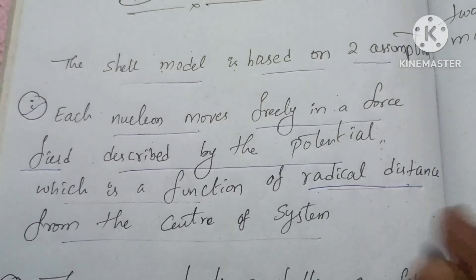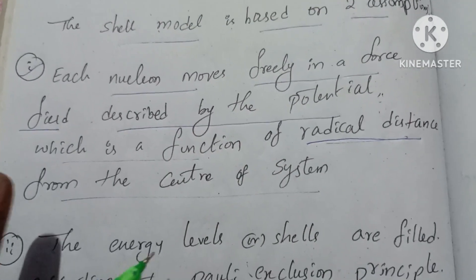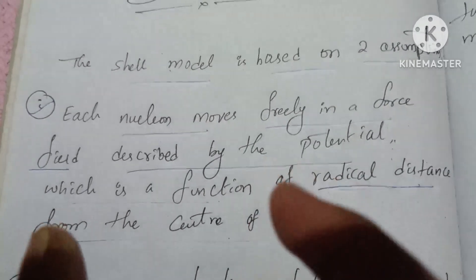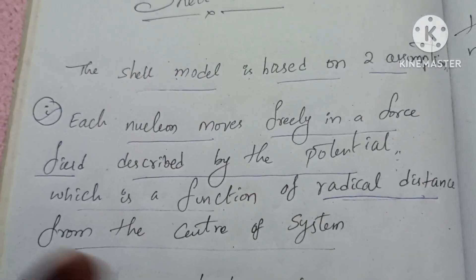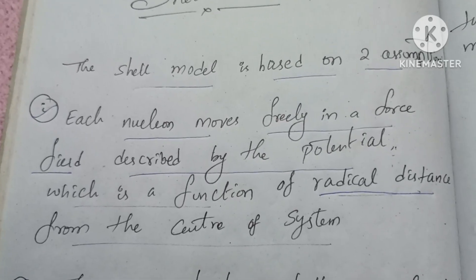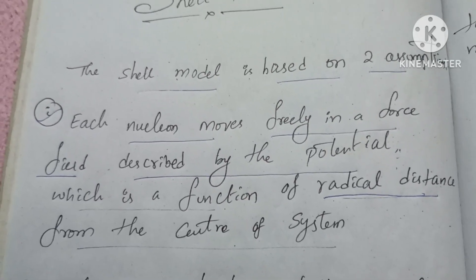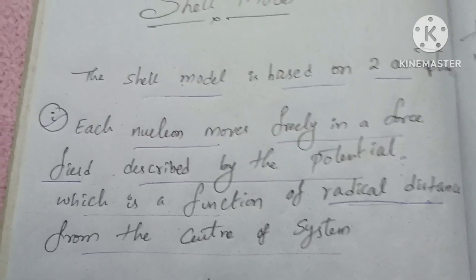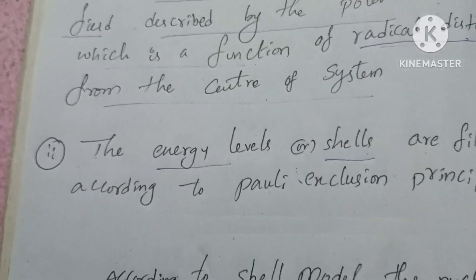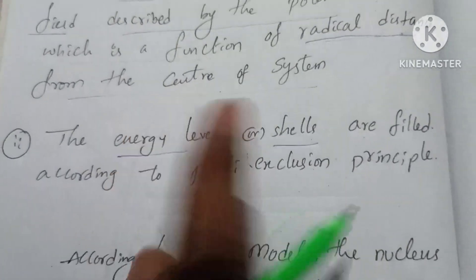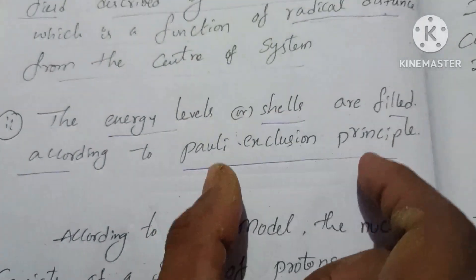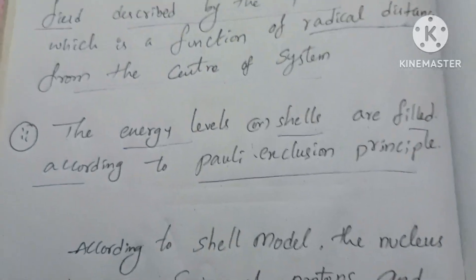The potential is a function of radial distance based on the center of the system. The energy levels are shells, and energy levels are filled according to the Pauli exclusion principle.